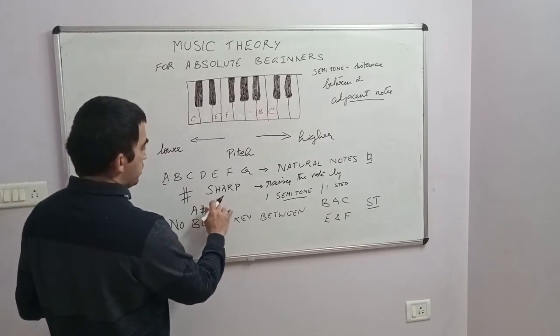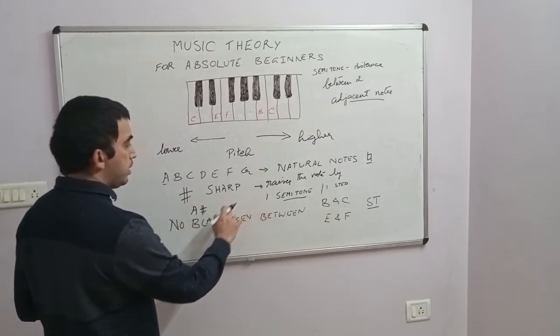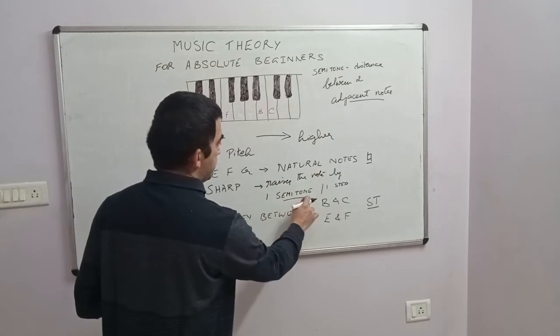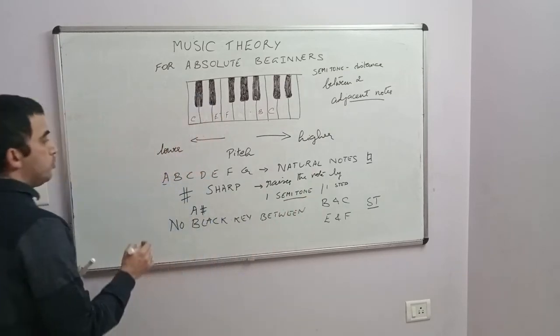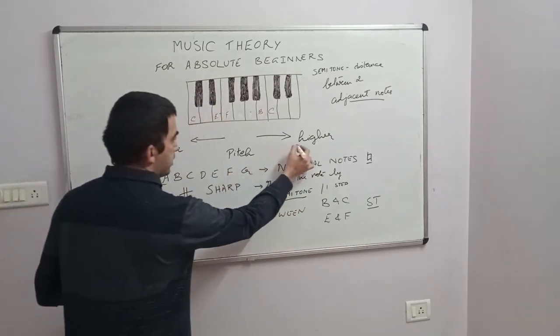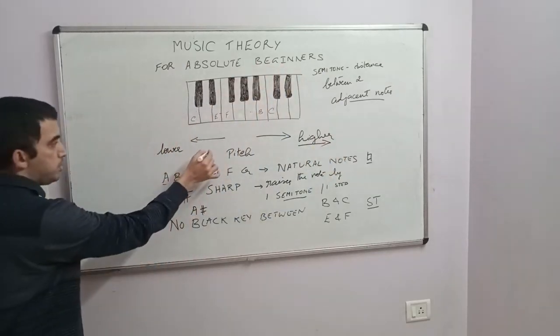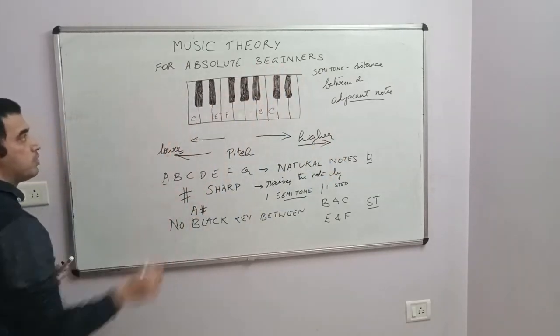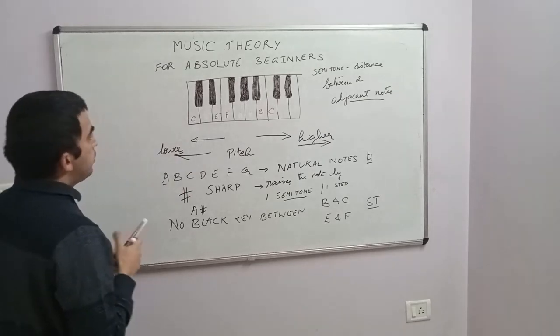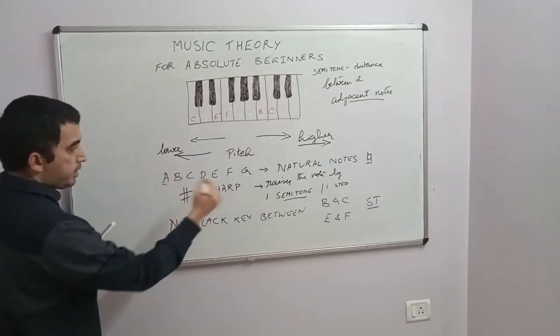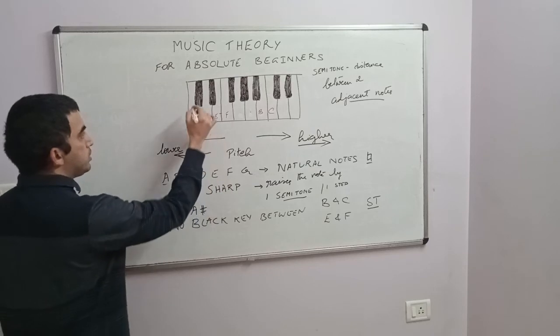Now that you understand what a semitone is, the sharp means it raises the note by one semitone. Raises, like I said from the last class, always means you're going toward the right of the key. Lowers means you go toward the left of the key.